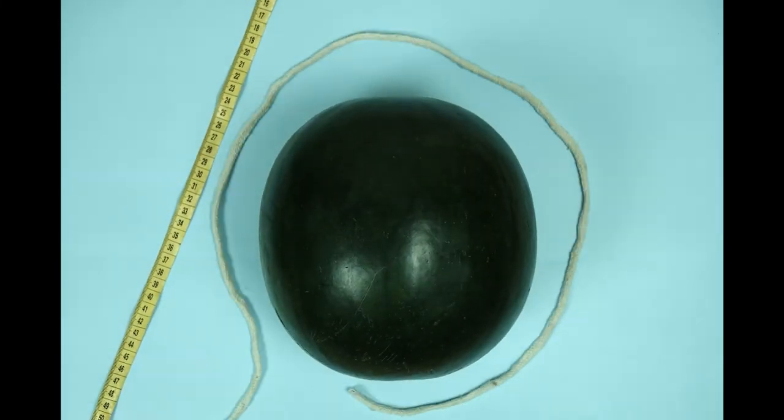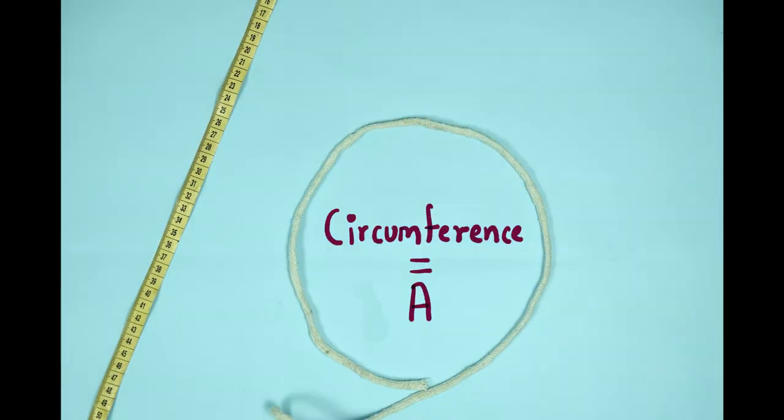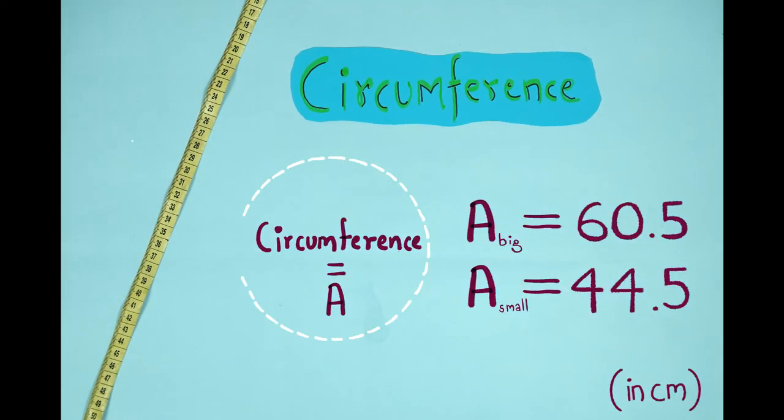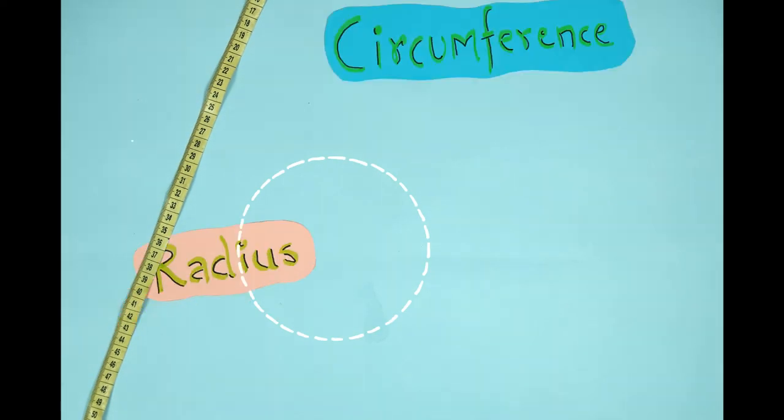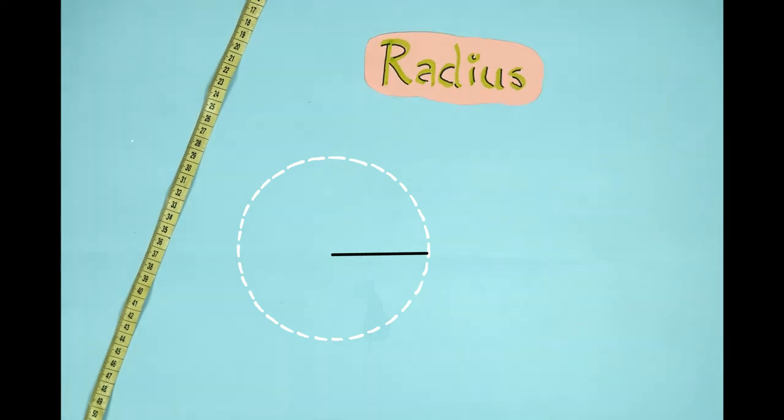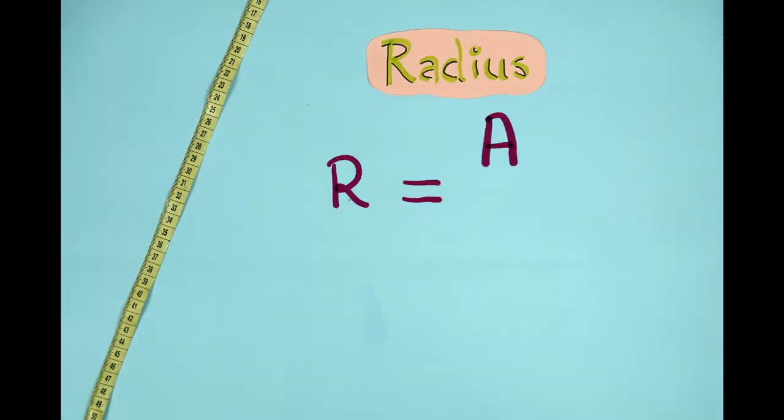I take a long string and wrap it around each watermelon. This is the circumference. And I calculate the radius using the formula r is equal to a by 2 pi.